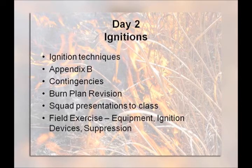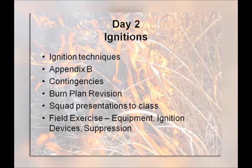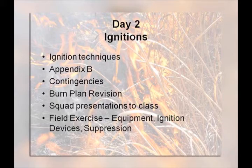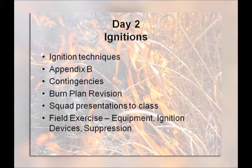We also touched on how you can use different ignition techniques to manage smoke. Then we went into a presentation on Appendix B. Most of you are probably familiar with it — you punch in desired weather conditions and physical attributes of your property or burn unit, put them into the table, and it spits out important values like flame length, rate of spread, and probability of ignition. We wanted to make sure students understood this is a really good tool when developing your burn plan.